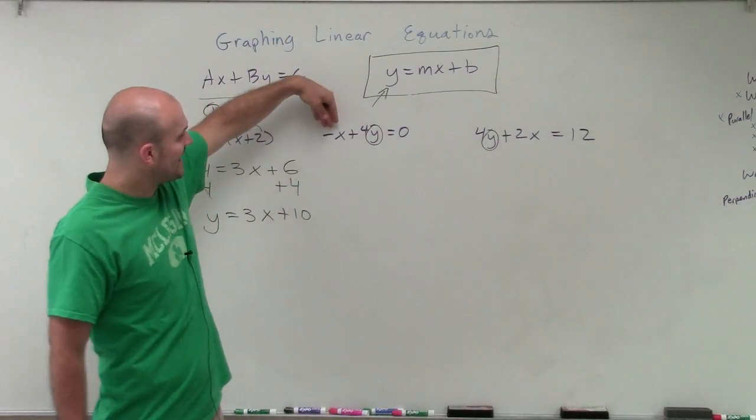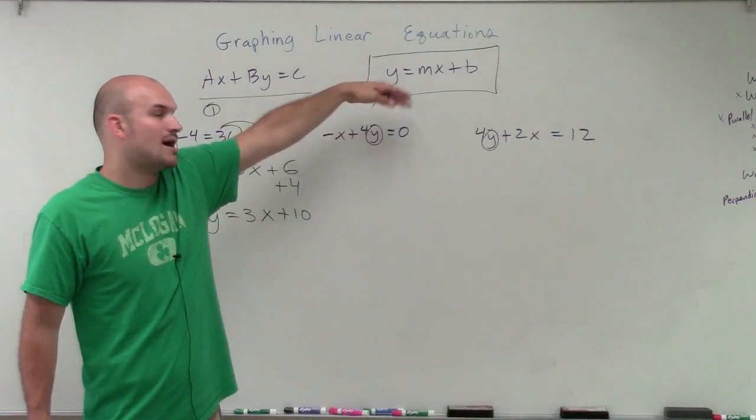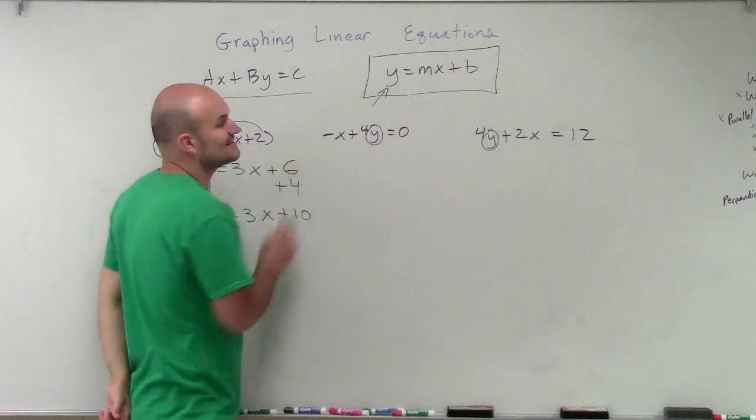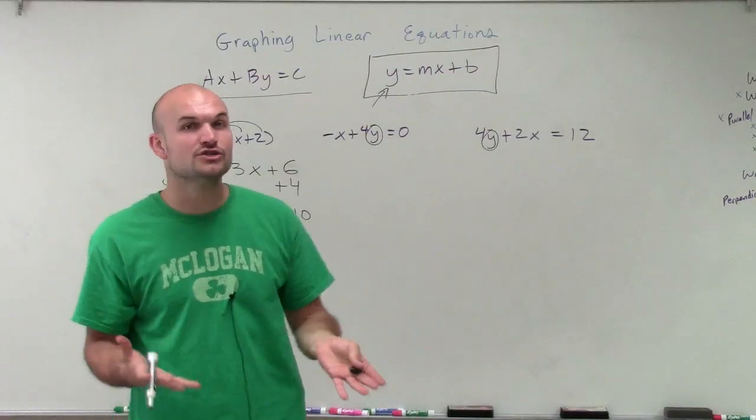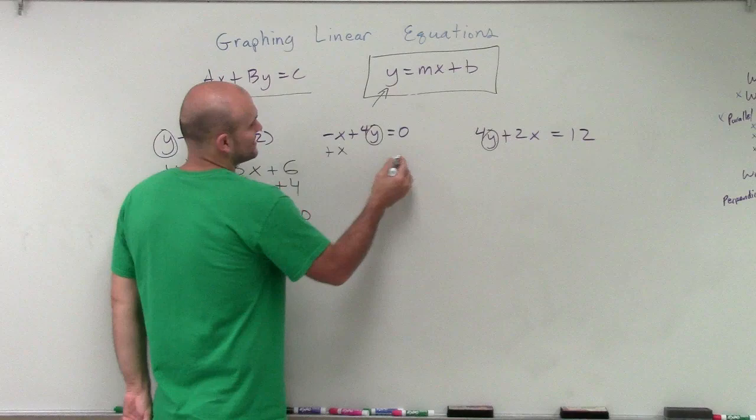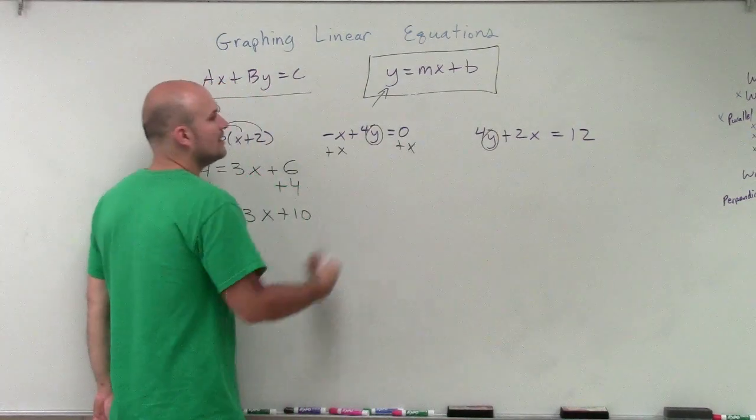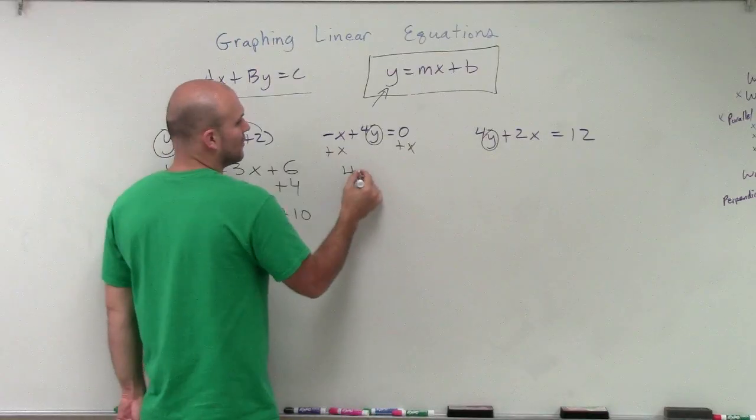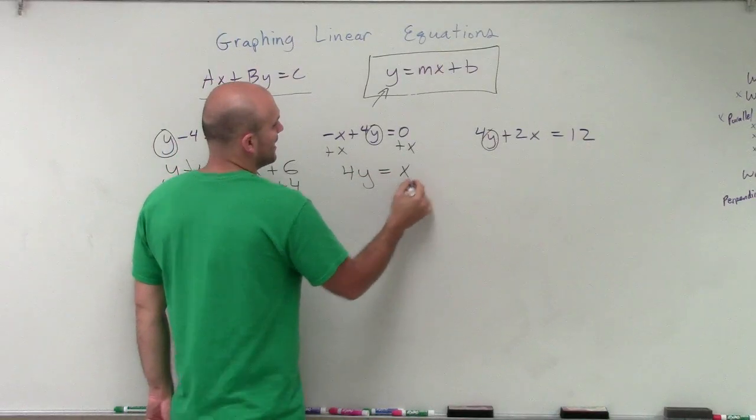In this example, we have a negative x on the side plus a 4y. Well, remember, I need to get the y all by itself. So I need to get rid of this negative x. So to undo a negative x, I need to add the x to both sides. Now, I can just add the x. Since there's only 0 over there, I can just add that x in there. So therefore, I have 4y equals x.